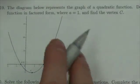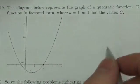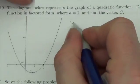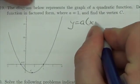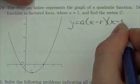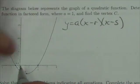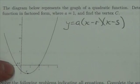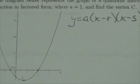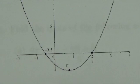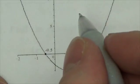So what they're asking us to do here is to find it in root form first. Factored form really is just root form. Now, we are given two roots here. Notice that the two roots we're given are negative 0.5 and positive 2, which means we can write this in two different ways.